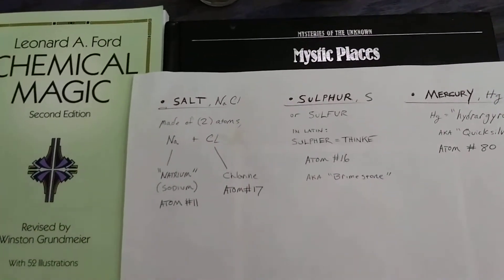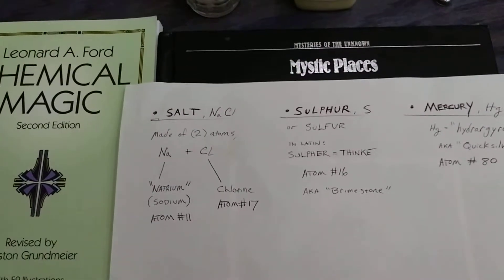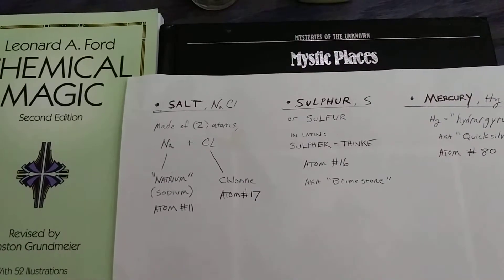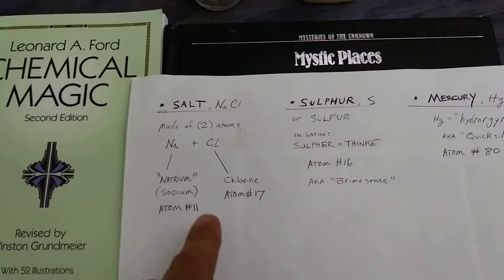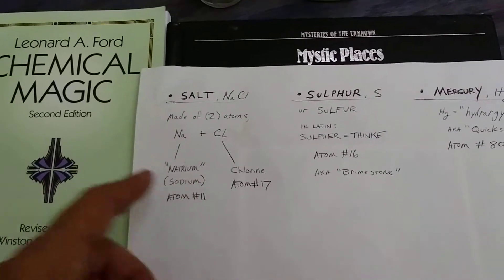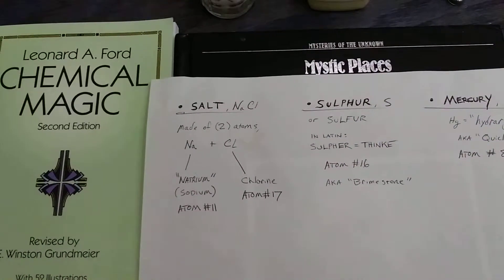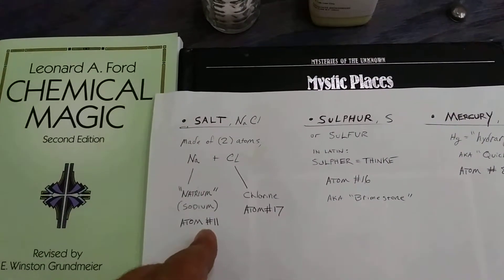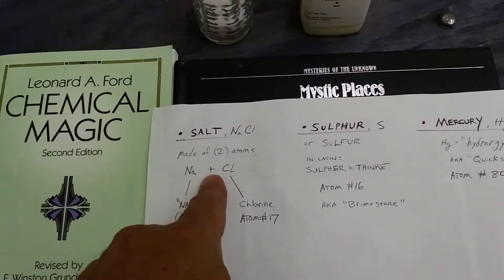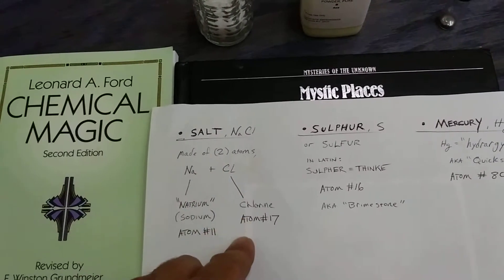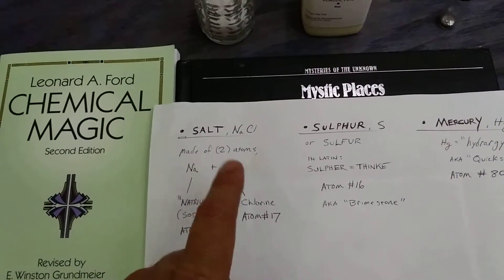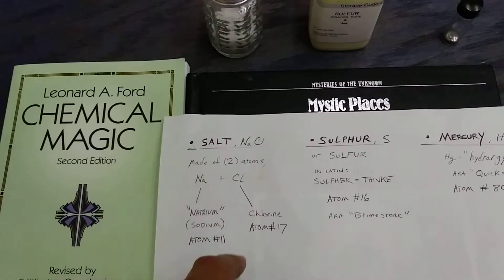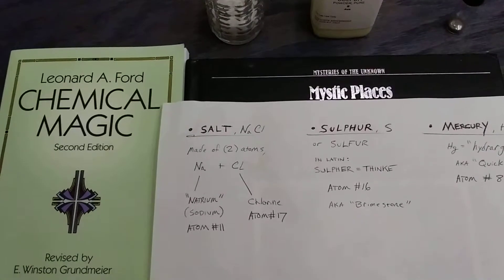Let's begin with salt. Ordinary salt is sodium chloride. It's made of two atoms: sodium, which is Na, and that comes from the word natrium, pertaining to the word natural, because it's a common substance. It's atom number 11, and it's a metal. When it's combined with chlorine, atom number 17, a gas, it becomes salt. So salt is actually two substances combined with a very strong bond.